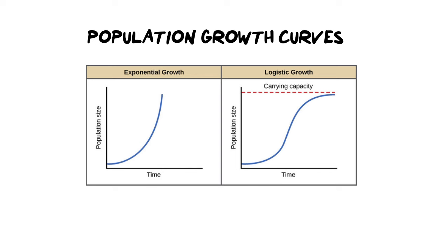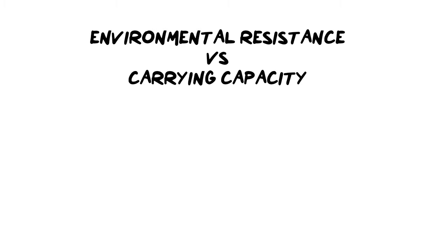Before we get into the deeper explanations, I want to cover two major words you see very often. One is carrying capacity — what actually is it and how is it formed? It's really important to know the difference between your terminology in this section. Two words that are often confused with each other are environmental resistance and carrying capacity. They are definitely not the same thing, and too many people confuse them. I'm going to show you the differences and how they interact with one another.